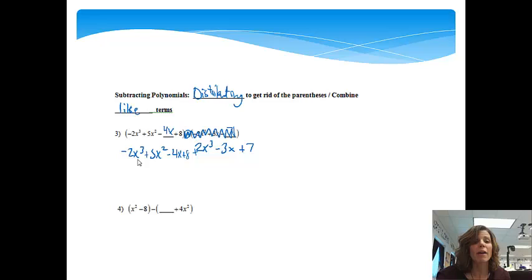Okay, so now from here, we can simply combine like terms just like we did in the adding video. If I have a negative 2x cubed and a positive 2x cubed, those are going to cancel each other out, so they are gone. My next one is 5x squared. There's not another one that has an x squared in it, so I'm just going to bring down the 5x squared. I next have negative 4x and negative 3x. Well, negative 4 and negative 3 is negative 7x. And then a positive 8 and a positive 7 gives me positive 15. So that would be my final answer.